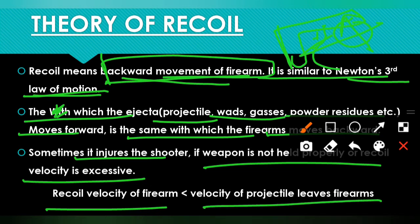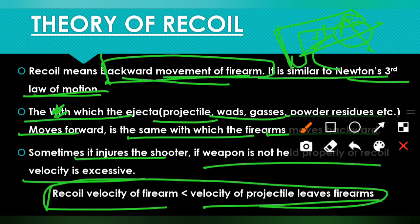The velocity of the projectile as it leaves the firearm is much greater than the backward recoil velocity of the firearm. The recoil velocity will be comparatively less than the projectile velocity when the firearm fires. This relation is very important and will be useful for your exam.